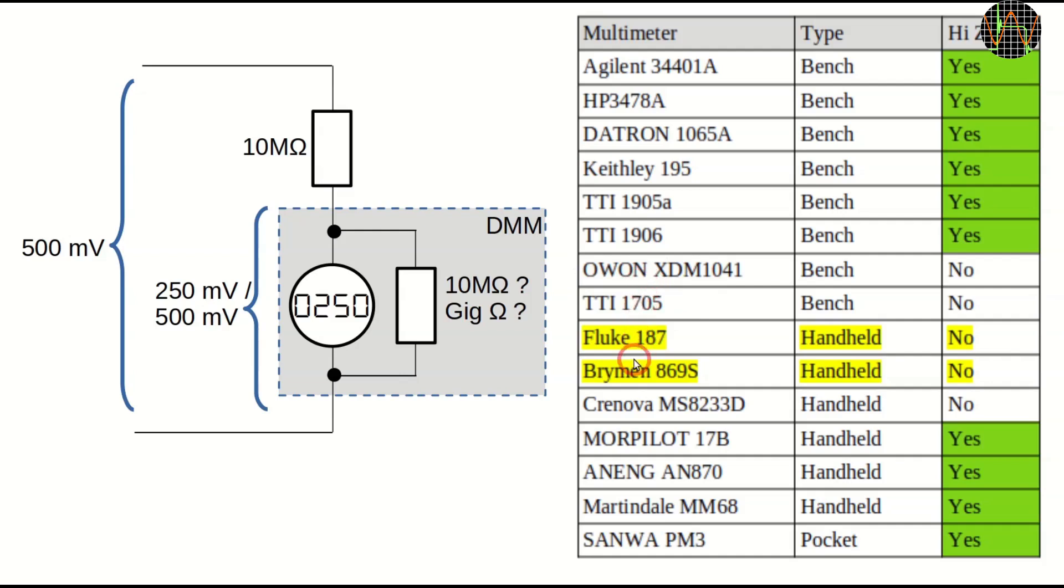None of my two fairly high-end handhelds have this capability, but I was surprised to find three other handhelds apart from the Morpilot 17B that have this capability, amazingly including the tiny pocket meter PM3. Only Martindale and Sunwa show this fact at least in the specs, but it is not mentioned otherwise, so it is easy to overlook. The high Z capability of the Morpilot DC mV is certainly a welcome bonus.